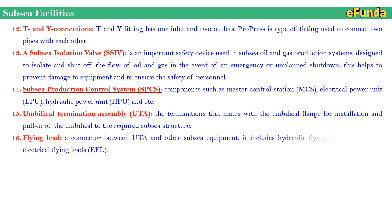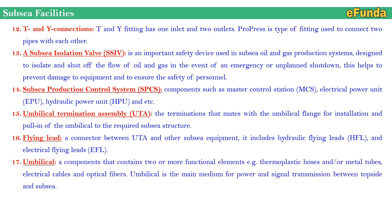Sixteenth, flying leads — a connector between UTA and other subsea equipment, including hydraulic flying lead (HFL) and electrical flying lead (EFL). Seventeenth, umbilical — a component containing two or more functional elements such as thermoplastic hoses, metal tubes, electrical cables, and optical fibers. The umbilical is the main medium for power and signal transmission between the topside facility and the subsea facility, acting as the interface point between topside and subsea.